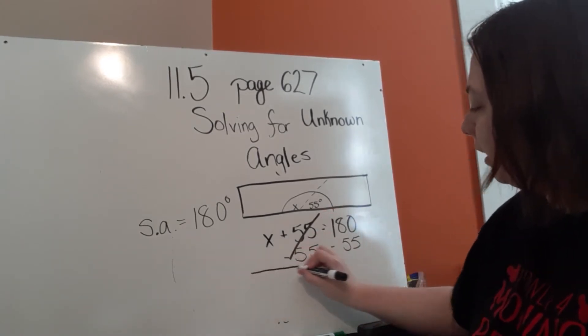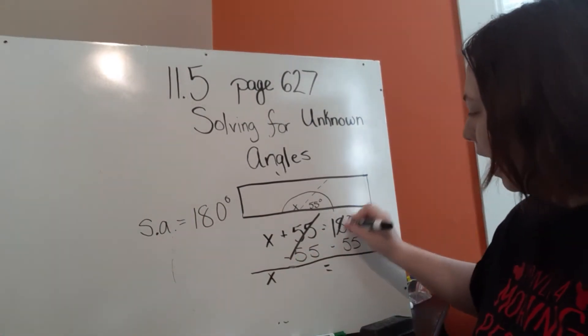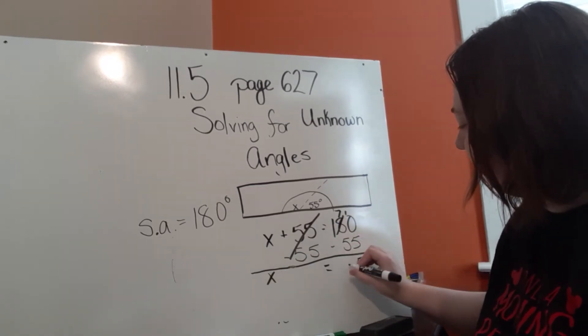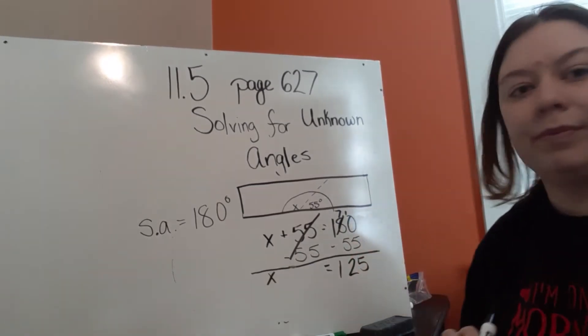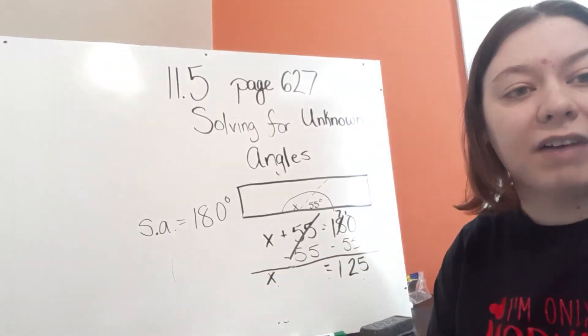By subtracting over here, I get rid of the 55 and I'm left with X. Now I'm going to do my subtraction, 180 minus 55. I'm left with X equals 125 degrees.